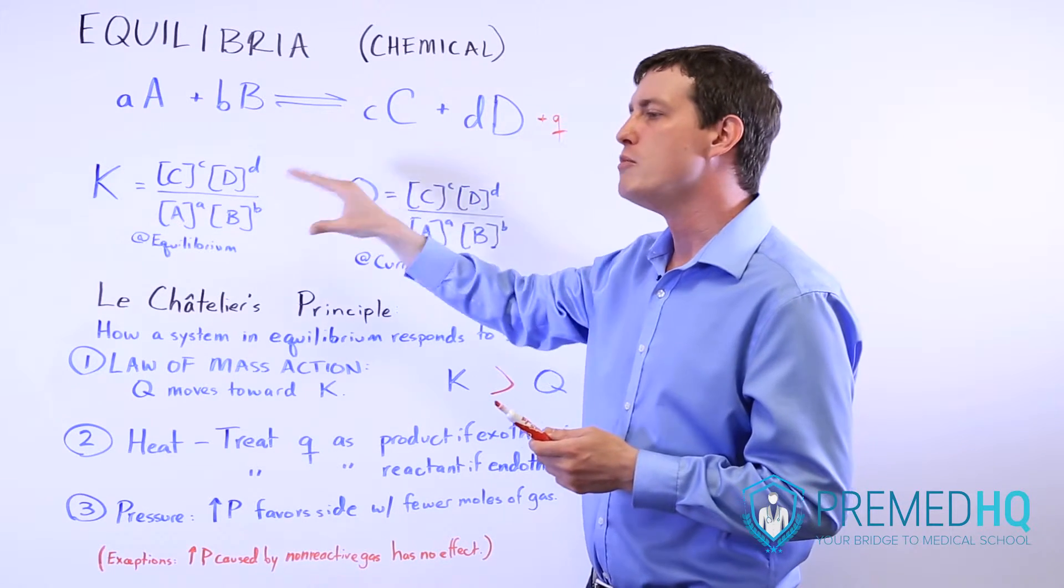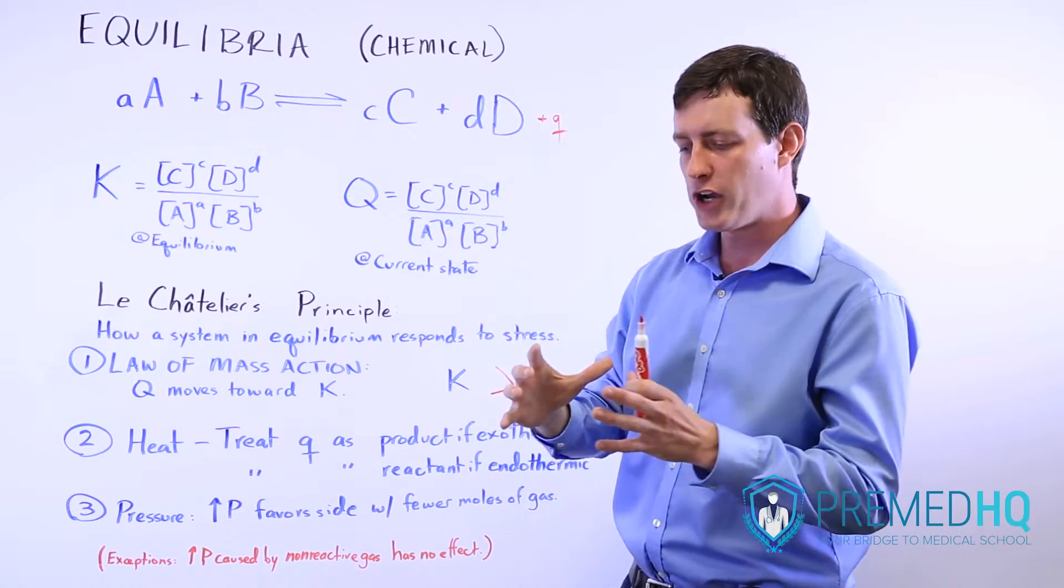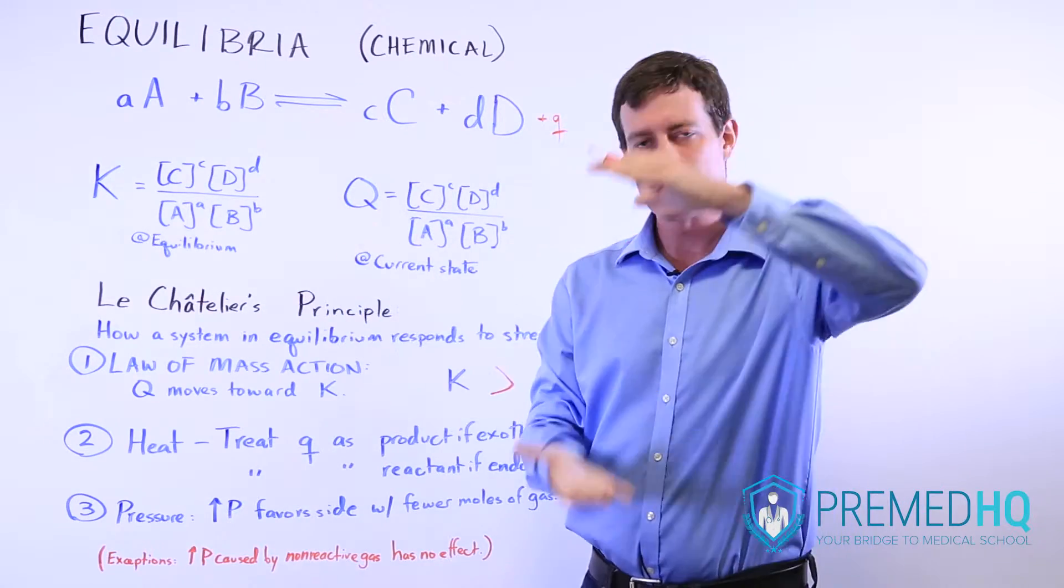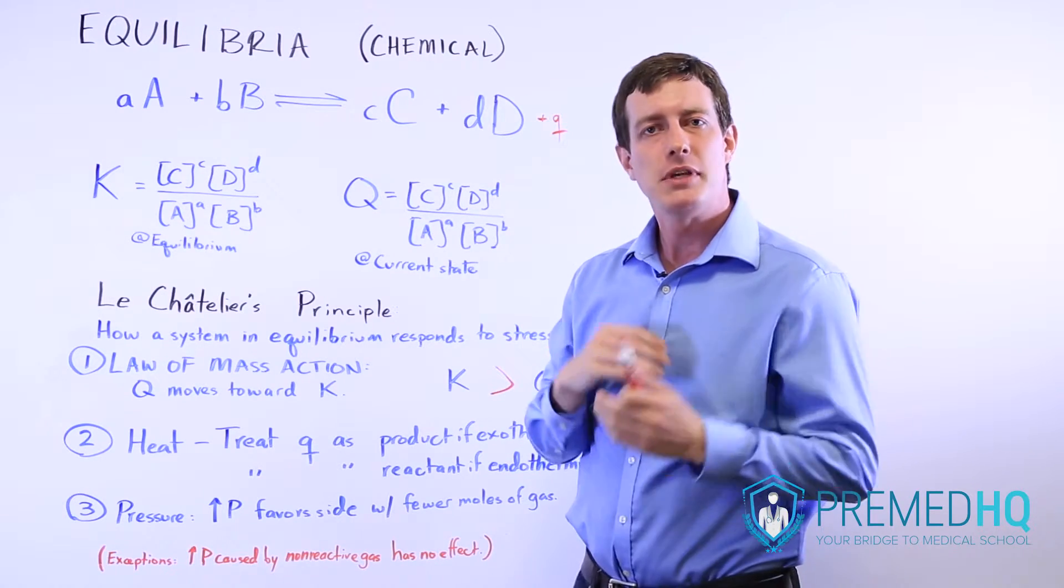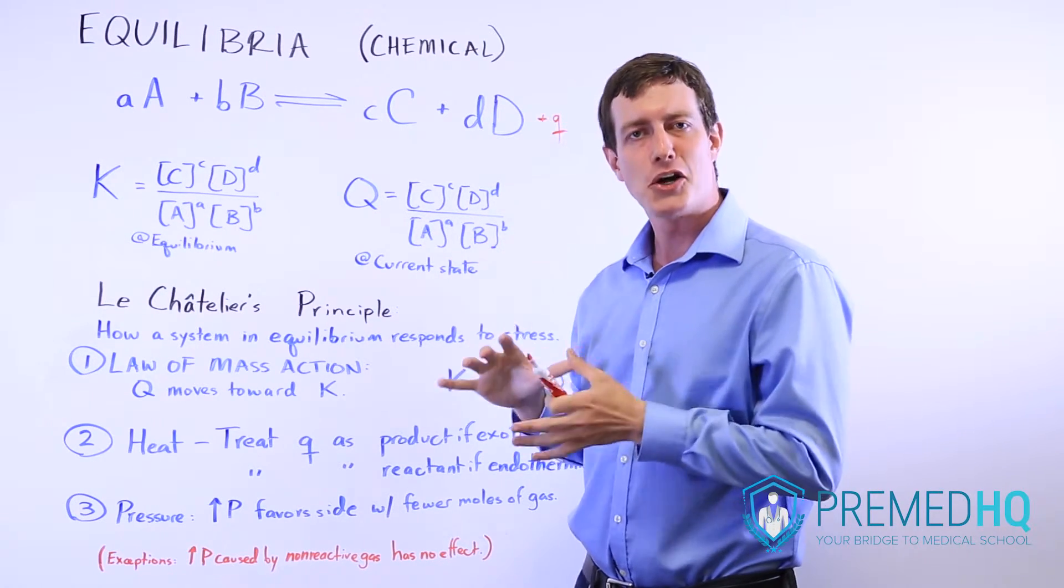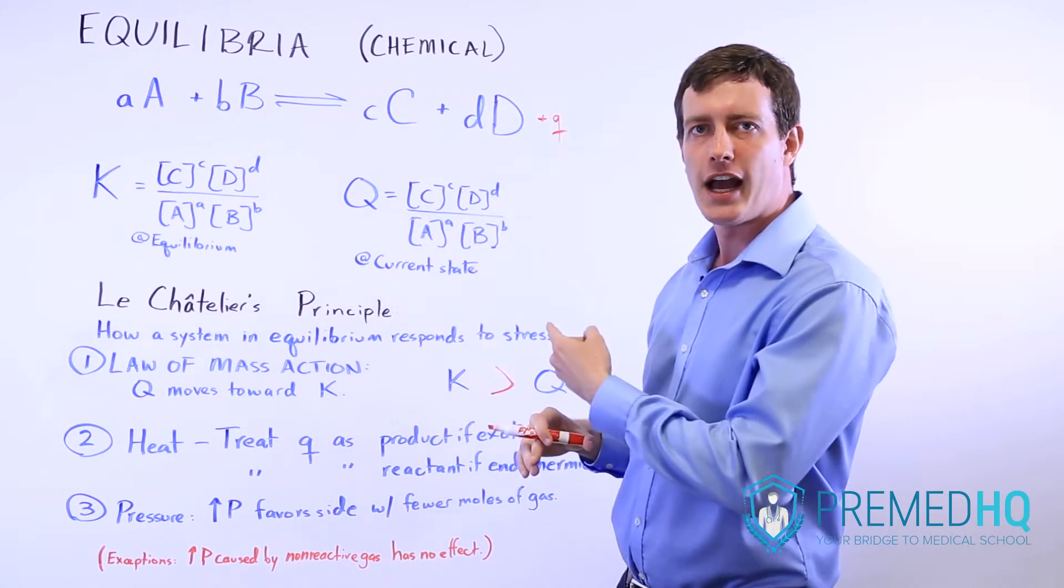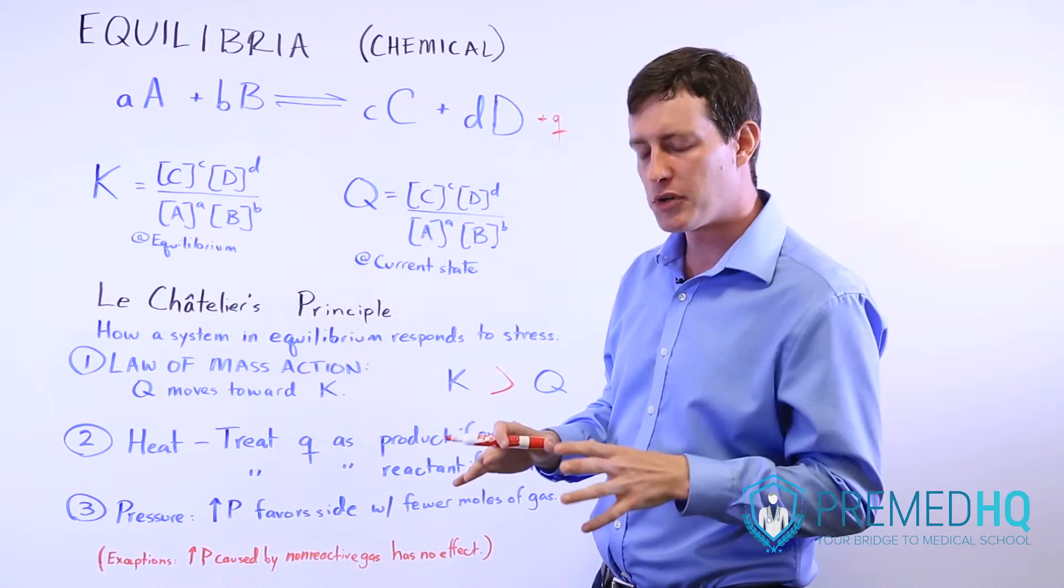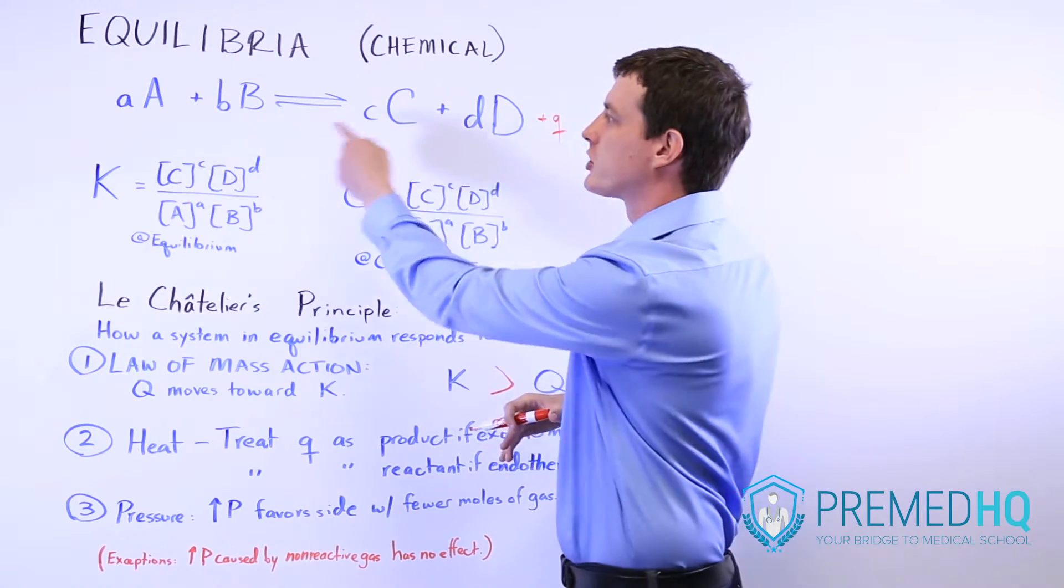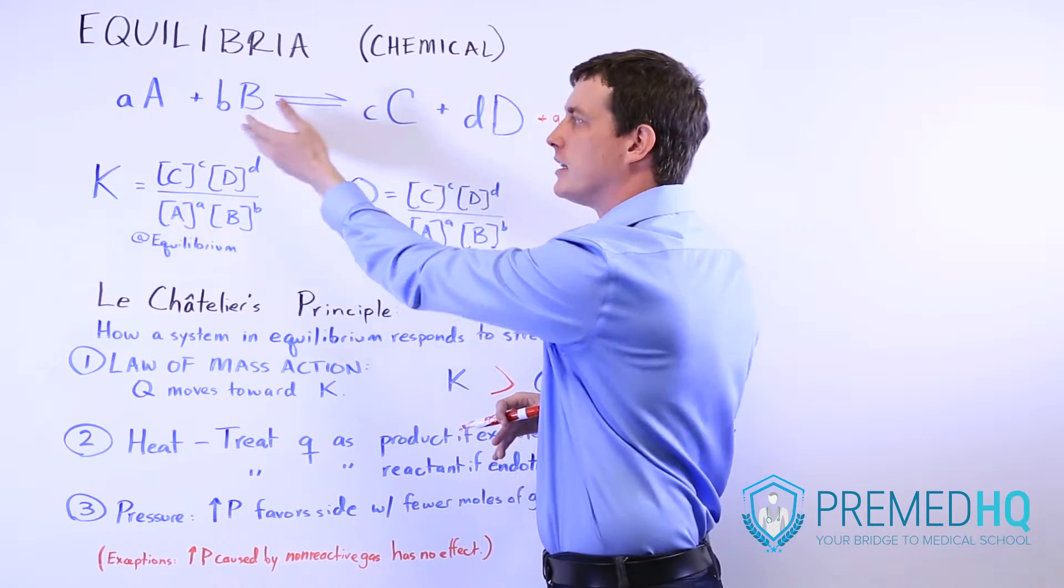And similarly, if you removed pressure or, for example, you had the same reaction going on, but you increased the area, the volume in which it was happening, that would be something that would lower the pressure overall. And lower pressure favors the side of the reaction with more moles of gas. And so by reducing pressure, that will cause the reaction to move toward the side that has more moles of gas in the balanced equation.